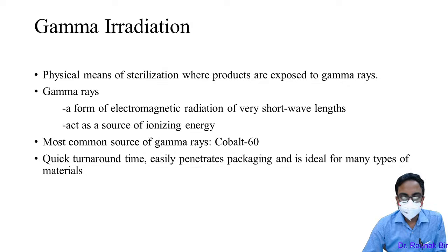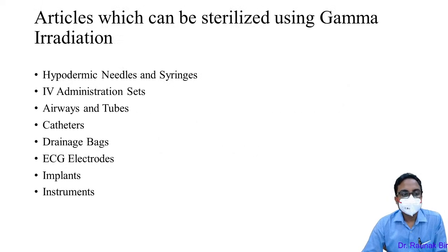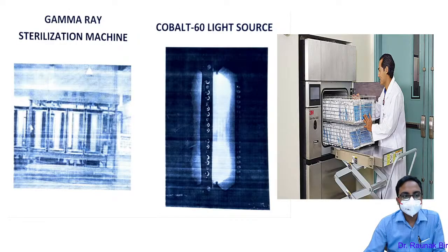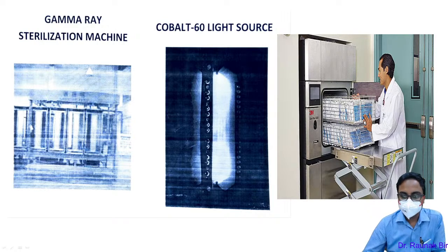Gamma radiation is a form of electromagnetic radiation with very short wavelength that causes ionization. It easily penetrates packaging and is ideal for many heat-labile materials. Uses include hypodermic needles, IV sets, air tubes, catheters, drainage bags, and ECG electrodes. The gamma ray irradiation machine uses a cobalt-60 source; this is also the machine where single-use glove packets are processed.